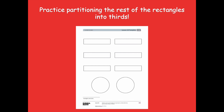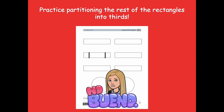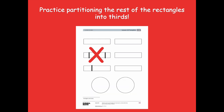Let's go back to our lesson template and practice partitioning the rest of the rectangles into thirds. Focus on just the two in the middle — the two middle rectangles. Remember, you need to try and make your thirds as equal as possible. Here's an example that's no good — look how big that space is in the middle and those two on the end are super tiny. So remember, you're trying to make them as equal as possible.